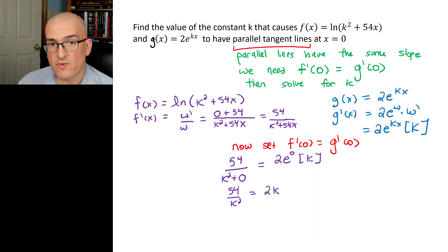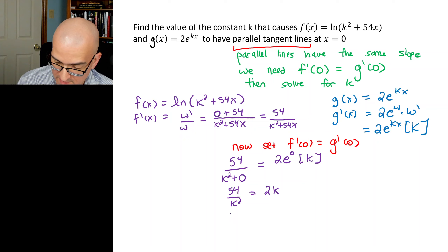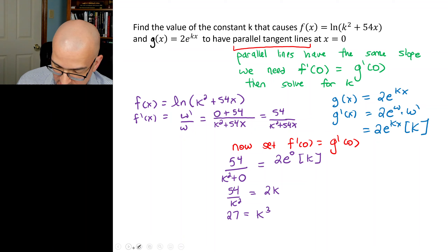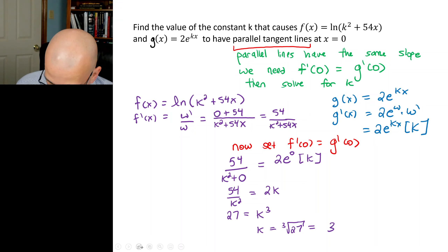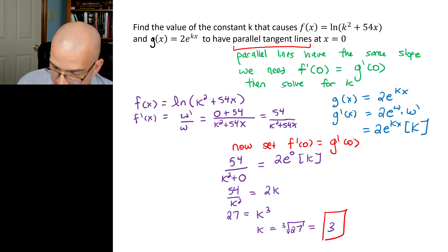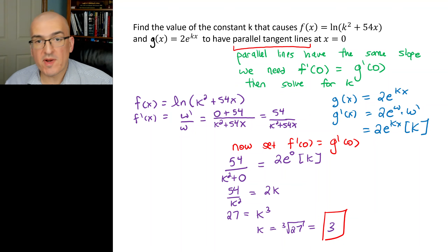Dividing both sides by 2 and multiplying by k²: 27 = k³. Therefore k = ∛27 = 3. That's our answer — for k = 3, these two functions will have parallel tangent lines at x = 0.